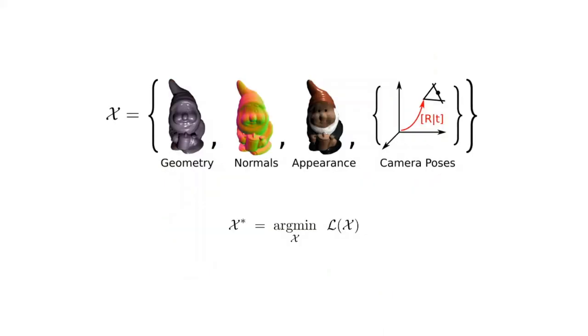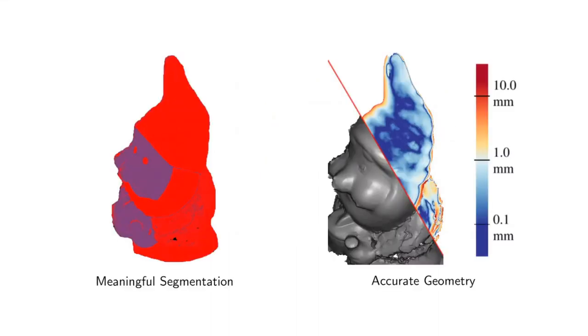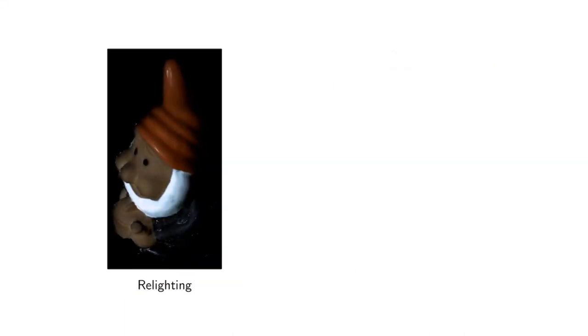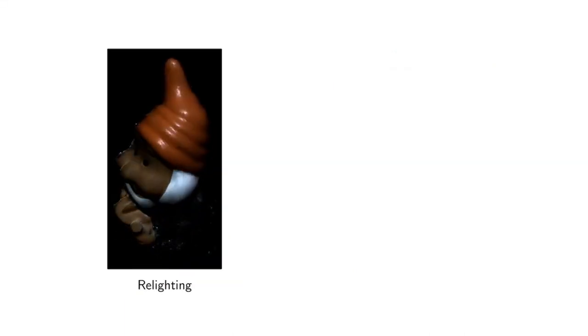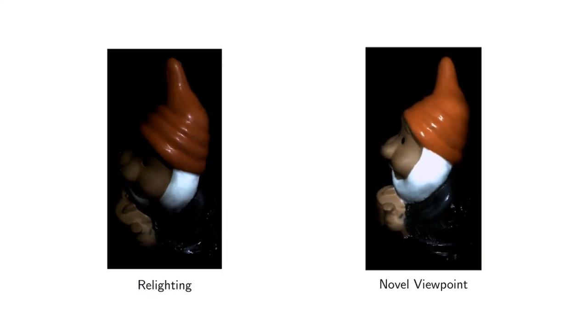Our key contribution is a novel formulation for joint optimization of geometry, normals, appearance and camera poses. We define a single objective function that can be minimized using off-the-shelf gradient-based solvers. Our formulation results in meaningful material segmentation and accurate geometry reconstruction with fine details. Correct materials allow arbitrary relighting and rendering novel viewpoints.